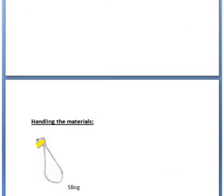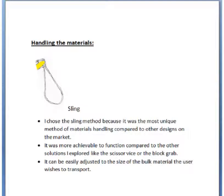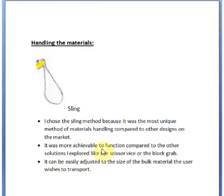Next, we move on to the first problem that you posed and solved — why we chose a sling as a means for handling the materials. I chose the sling method because it is the most unique method of materials handling compared to other designs on the market or even in your class. It was more achievable to function compared to the other solutions I explored, like the scissors vice or the block grab. It can be easily adjusted to the size of the bulk material that the user wishes to transport.